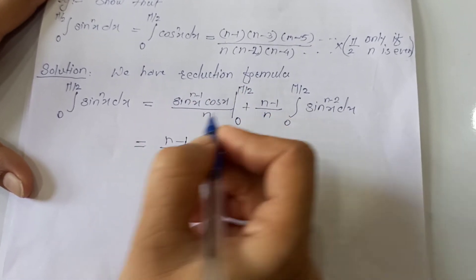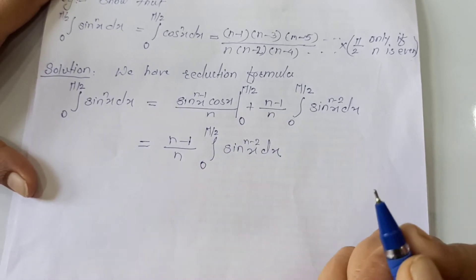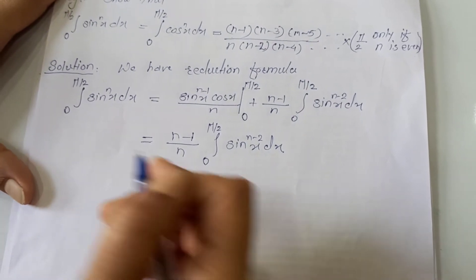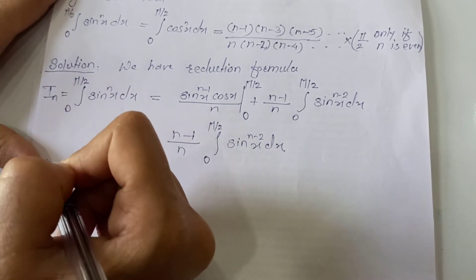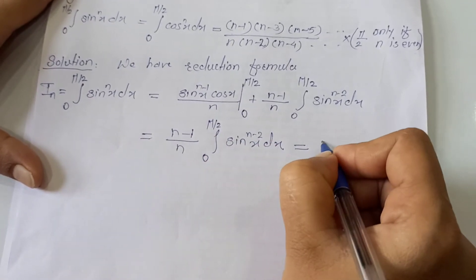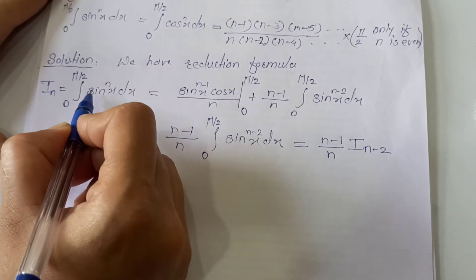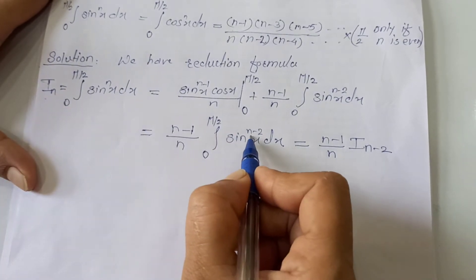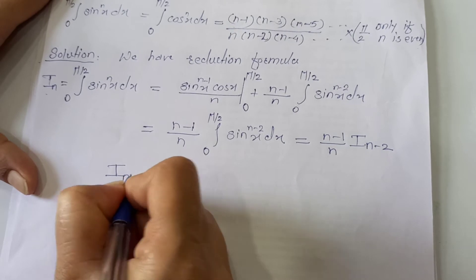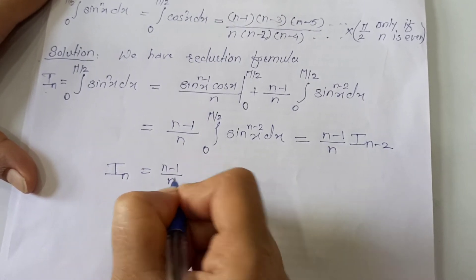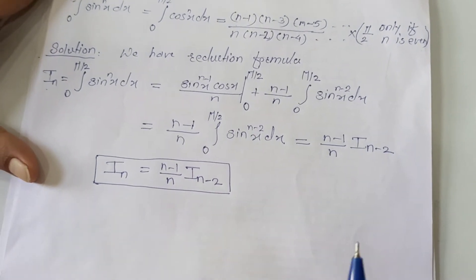So we are left with (n−1)/n times the integration from 0 to pi by 2 of sin raised to (n−2) x dx. I will convert this into notation form: I call the integration of sin raised to n of x dx from 0 to pi by 2 as Iₙ. Then this integral becomes Iₙ₋₂. So we have Iₙ = (n−1)/n · Iₙ₋₂. This is the reduction formula in notation form. Let's apply this formula recursively.